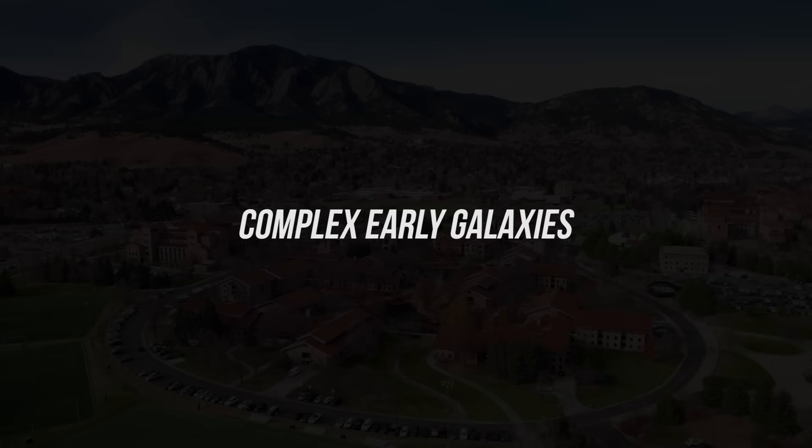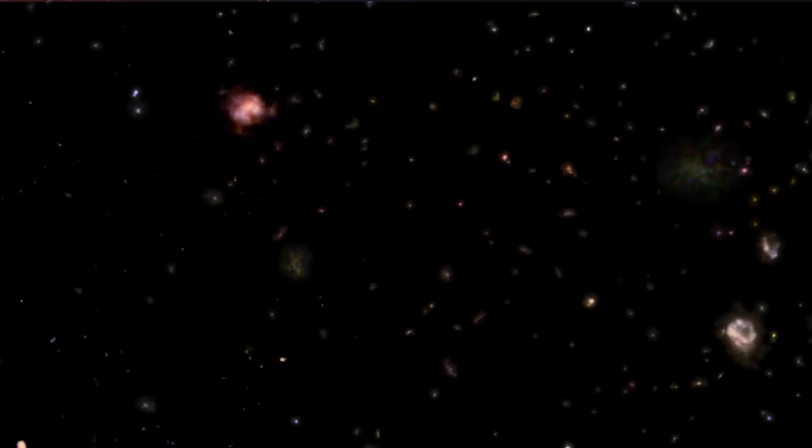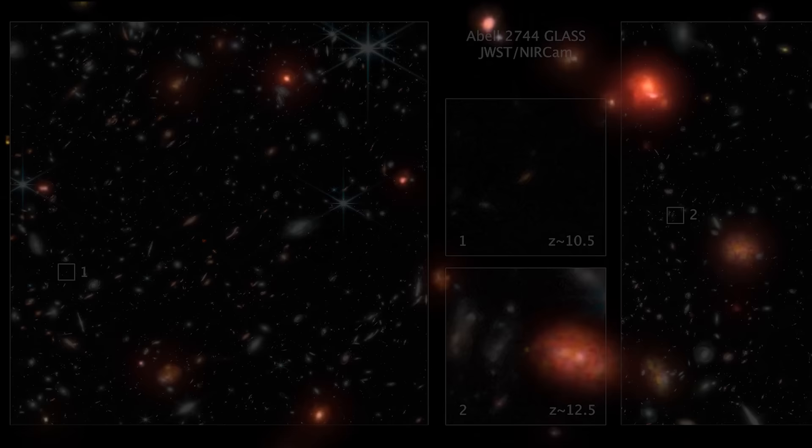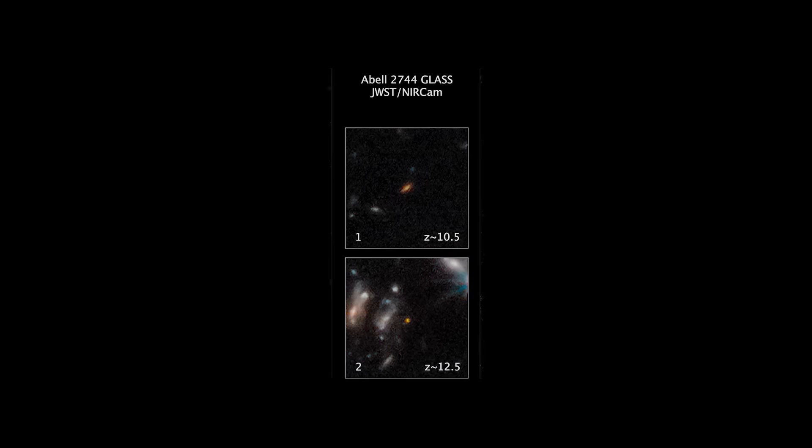The team that discovered the distant galaxies were from the University of Colorado, and they weren't surprised just at the discovery, but they were perplexed at how they even managed to do it. It made them question their understanding of how galaxies formed in the early stages of the universe. The distant young galaxies captured by the James Webb telescope are vastly different to the Milky Way, and are significantly brighter than astronomers expected them to be.